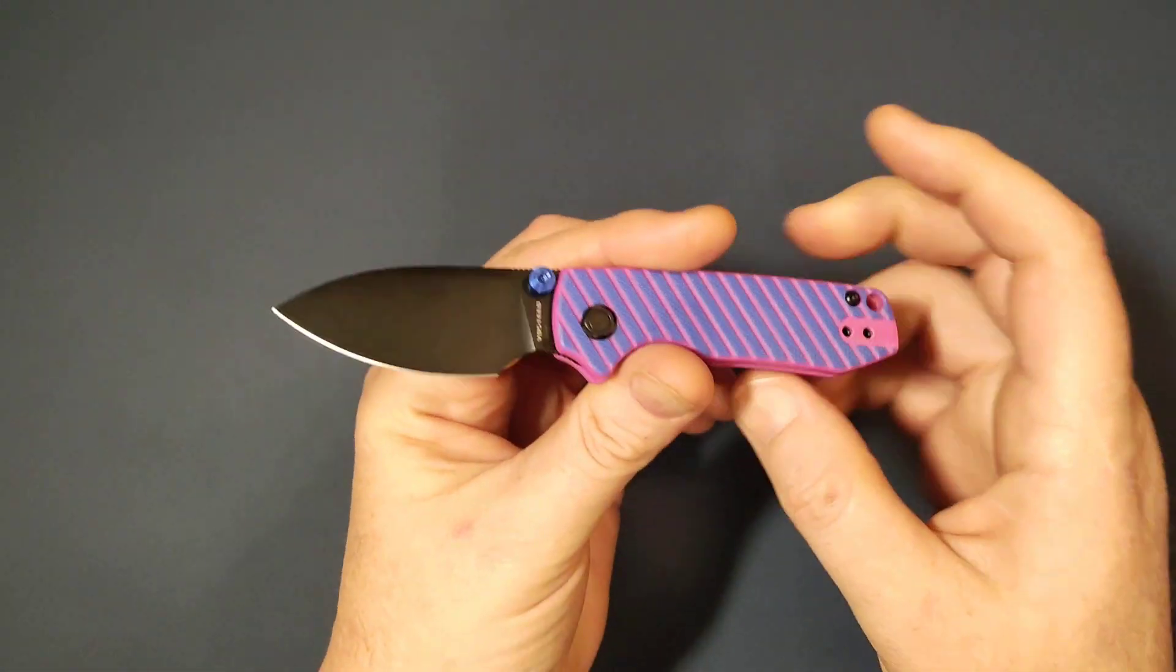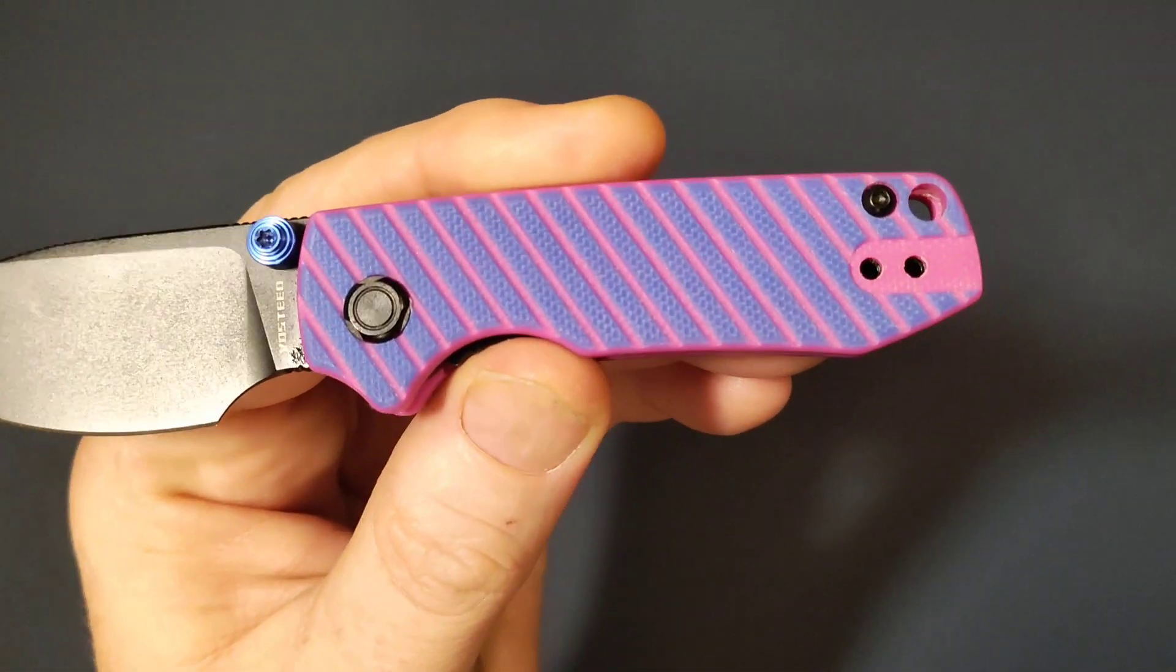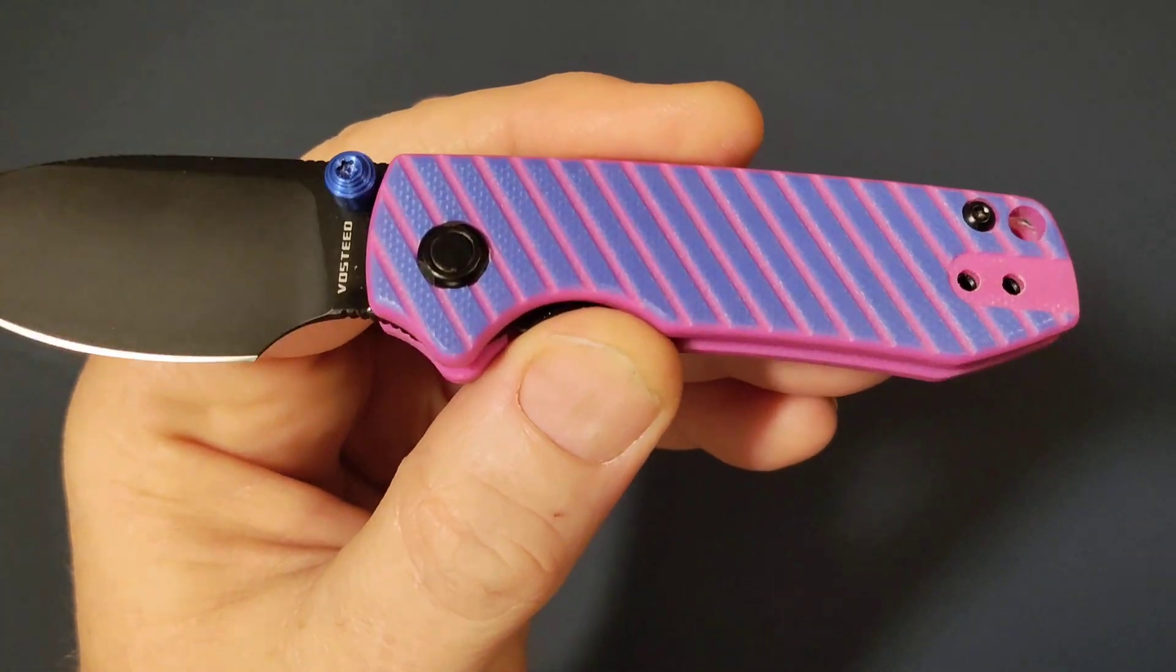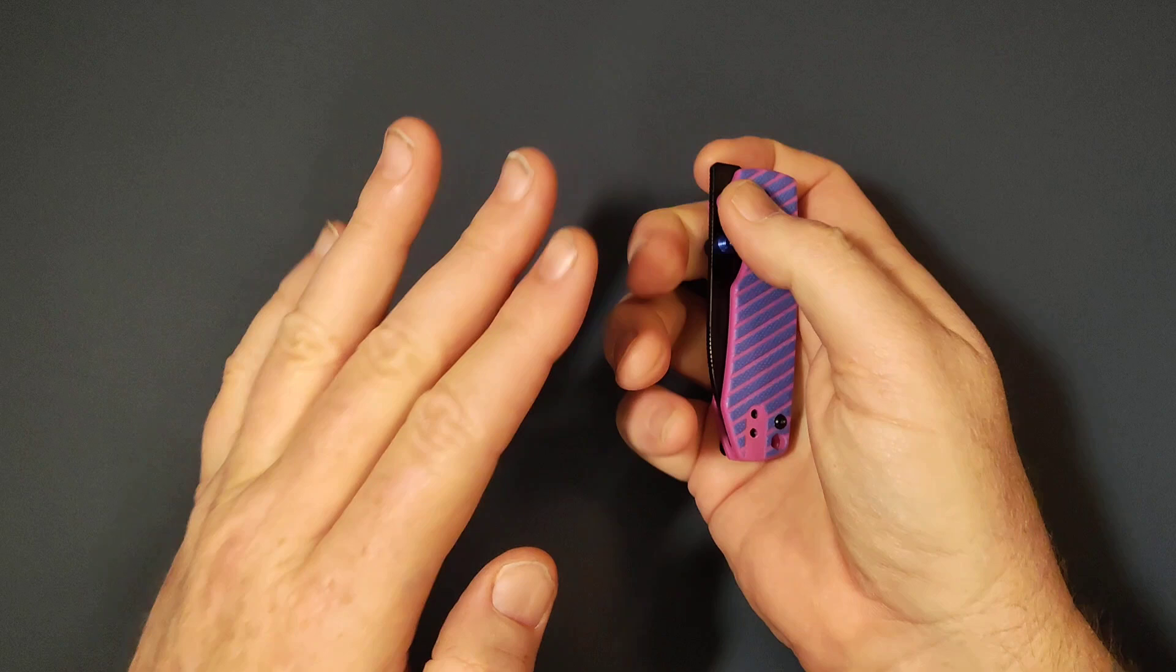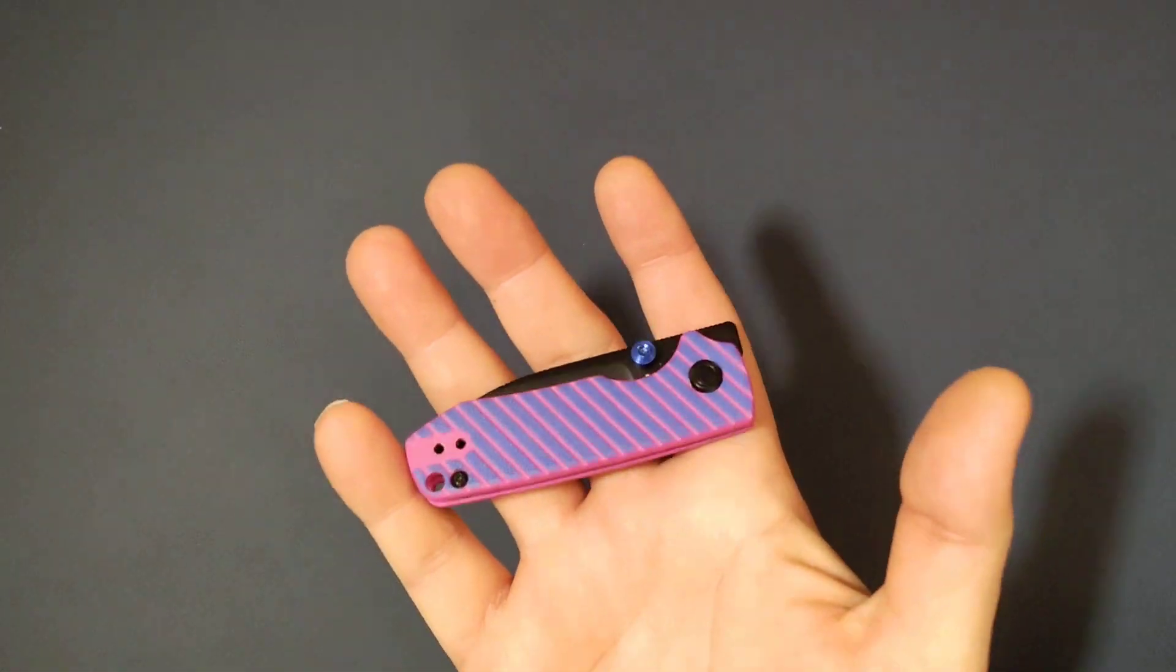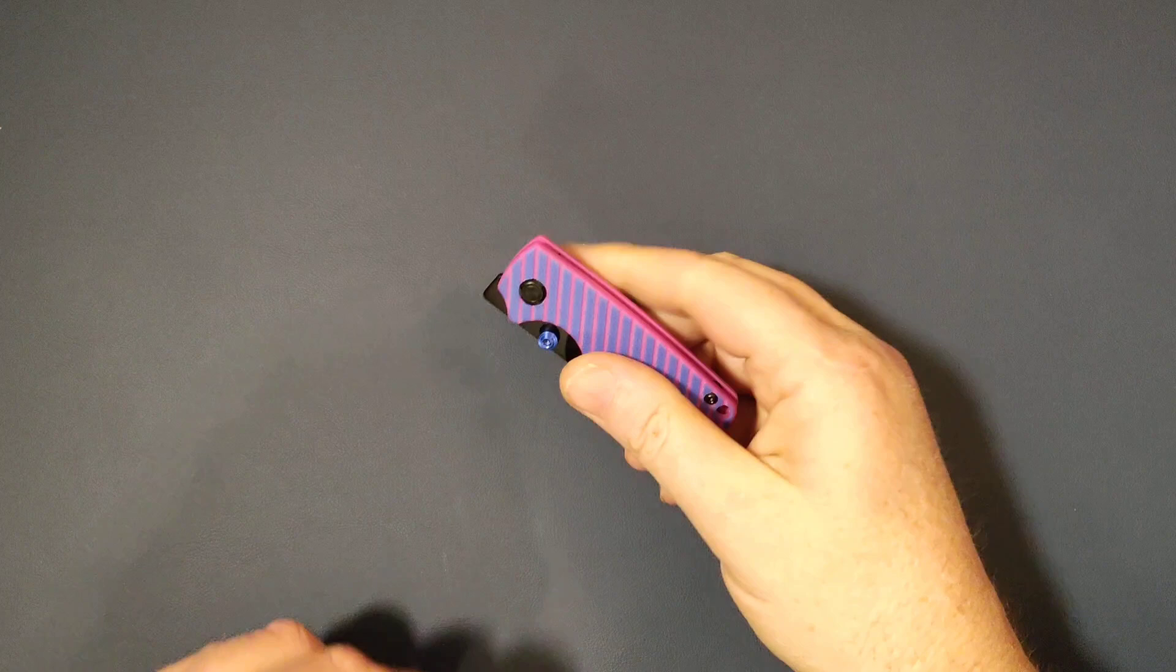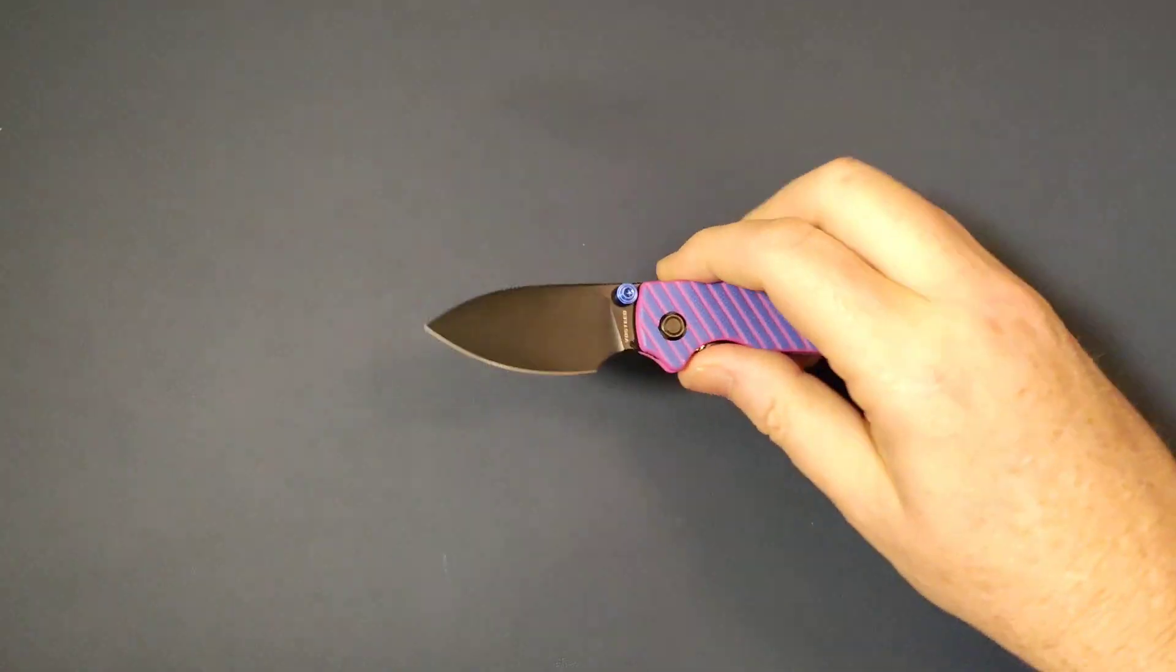Of course you've got your G10 handles here. As I said, the new candy stripe pink and blue. Still, this thing only weighs an impressive 2.04 ounces.